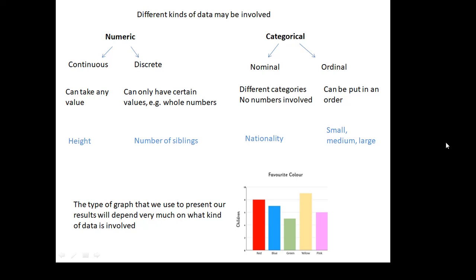Categorical, there's two types of categorical data. It can be nominal or ordinal. Nominal, different categories. There's no numbers involved. Nationality, your French or your German or your Spanish. No particular order. Ordinal ones, you can put them in order. Small, medium, large. You can put them in order. But basically, numeric and categorical. The type of data involved will affect what kind of graph we're going to present our data. Do we do a bar chart? If we do a bar chart, are the bars in any particular order? If it's numeric, then we'll probably do a point scatter graph. We won't do a bar graph. We'll do a line graph.